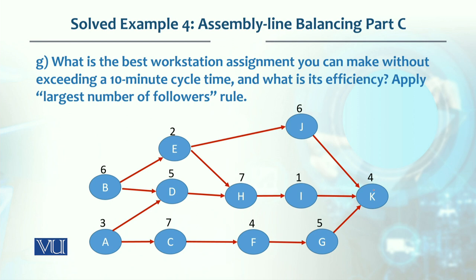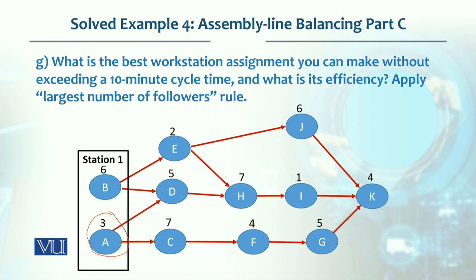A has followers D, C, H, F, I, J, N, K — which is 7 followers — while B has 6. So we assign A to workstation 1 first. Then C and B become available, but B has 6 followers versus C's 3, so B is assigned next. Workstation 1 has A and B, with a total time of 9 minutes.